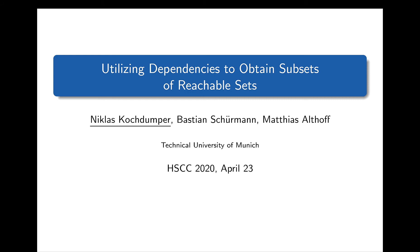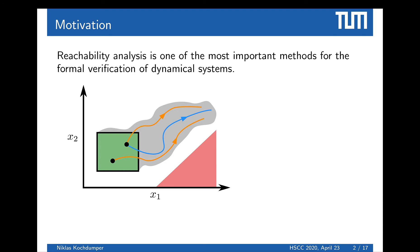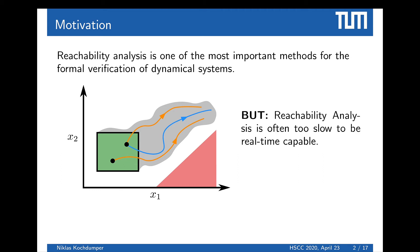Welcome to the presentation for the paper 'Utilizing Dependencies to Obtain Subsets of Reachable Sets.' Reachability analysis has become one of the most important methods for the formal verification of dynamical systems. However, a downside is that reachability analysis is often too slow to be real-time capable, so it can't be applied to verify systems in an online fashion, at least for high-dimensional systems. We propose a new method to reuse results from previous computations, which can significantly speed up reachability analysis, making it applicable to online applications as well.